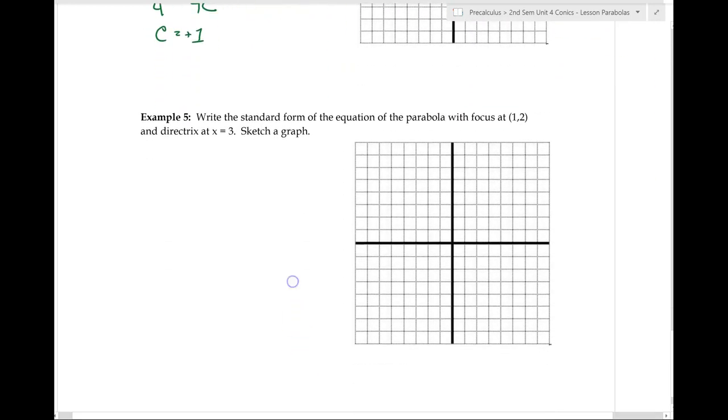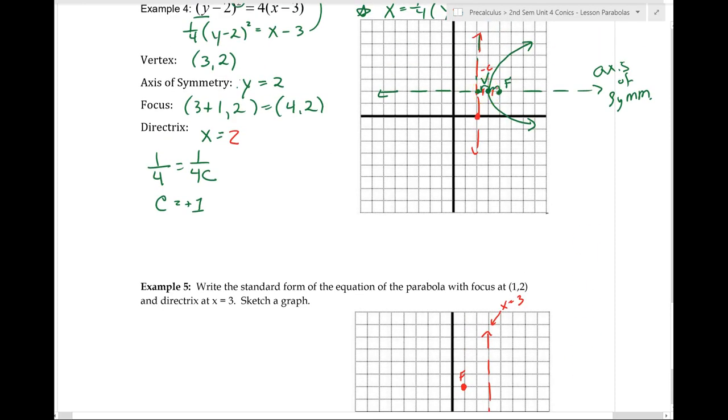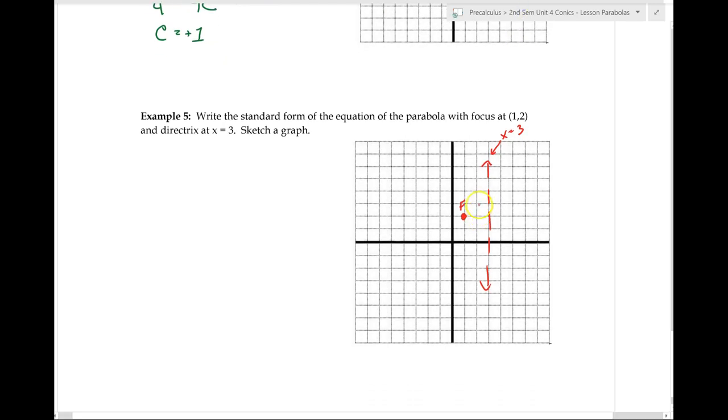So let's try this one. Write a standard form of an equation of a parabola with a focus at 1, 2. So here we are at 1, 2 is my focus. I have a directrix at x equals 3. So x equals 3 is right here is the directrix. Now, what's the deal that we've learned about our vertex? Our vertex is perfectly halfway in between your focus and directrix. So my vertex is going to end up being right here. My parabola is opening to the left.